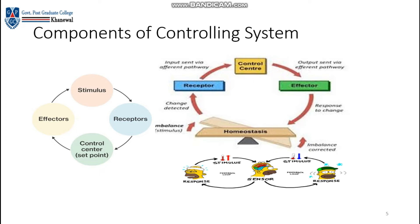In the diagram we can see: homeostasis imbalance occurred, stimulus showed the change, change was detected by receptors, then message went to the control center. After receiving the message, the control center conveys it to the effectors. Effectors show the response, and as a result the imbalance is corrected.